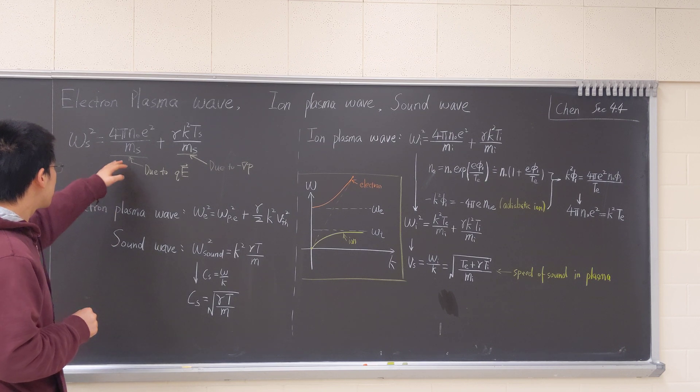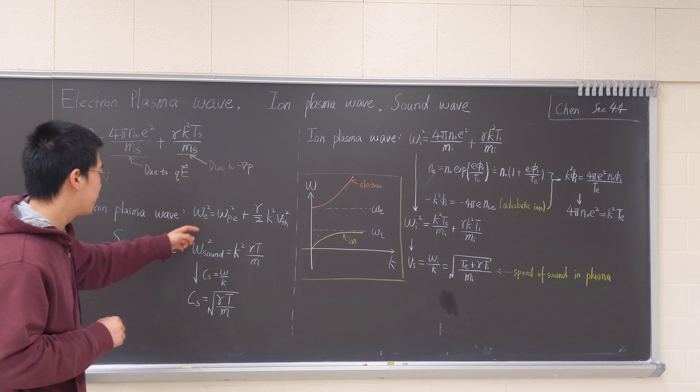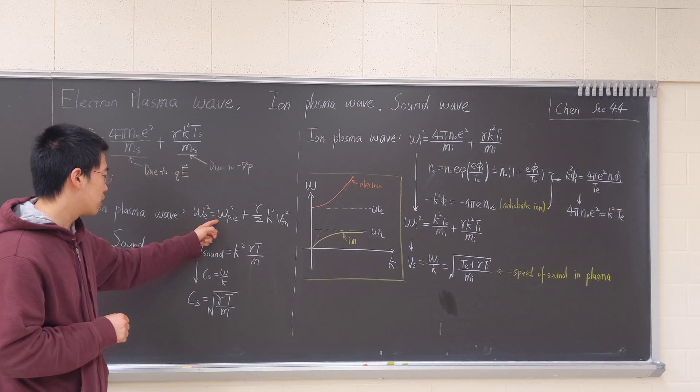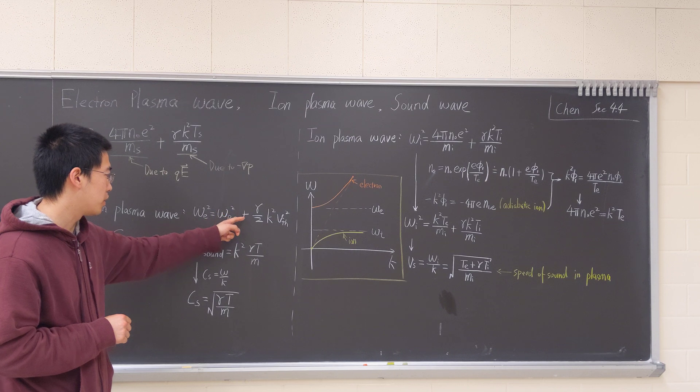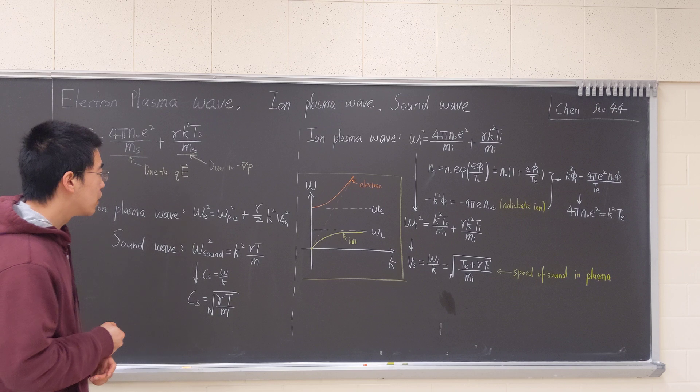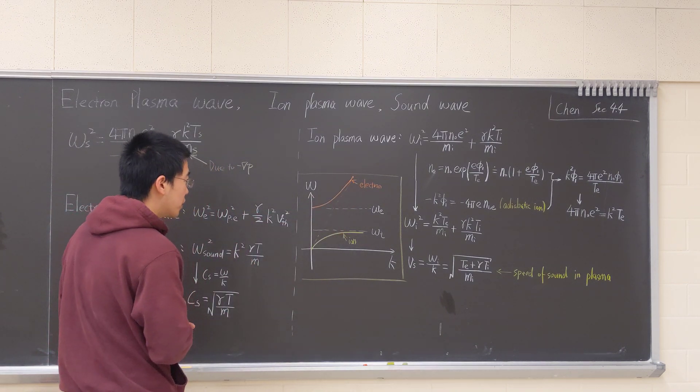And if we take the sub-square of two electrons, then we have this expression: omega e-square equals omega P e-square plus gamma over 2 k-square v-thermal-square. So this is pretty much the orange curve.